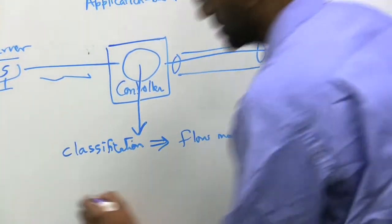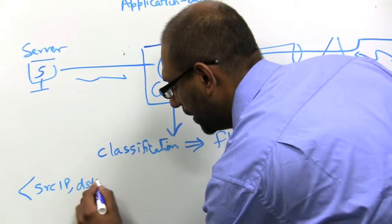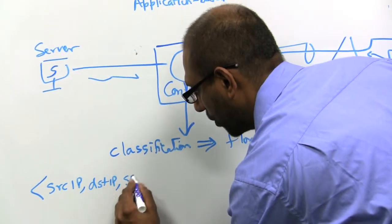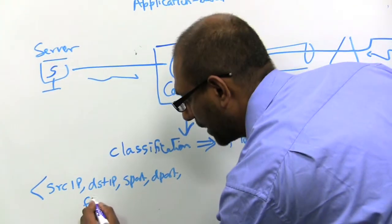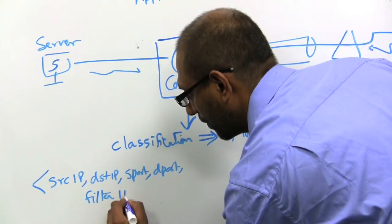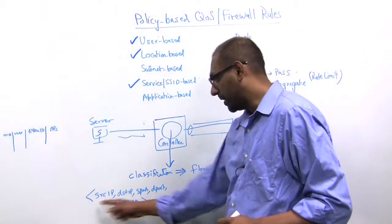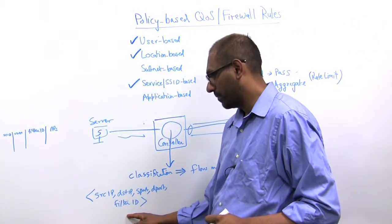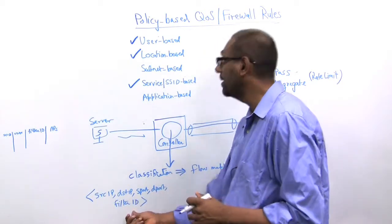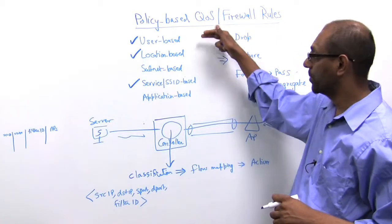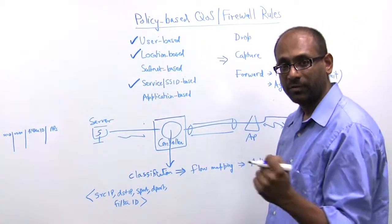We classify packets on the basis of the following: the source IP, the destination IP, the source port, destination port, and the filter ID that I talked about. So when a packet comes in, based on any combination of these five parameters—source IP, destination IP, source port, destination port, and filter ID, which is, as we talked before, user-based, location-based, and SSID-based—the packet gets a particular classification tag.